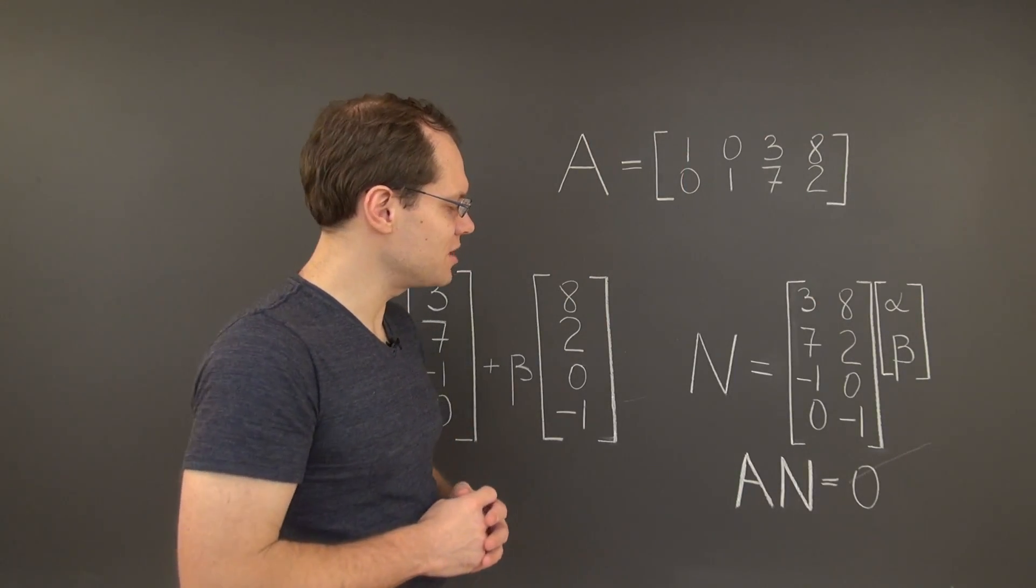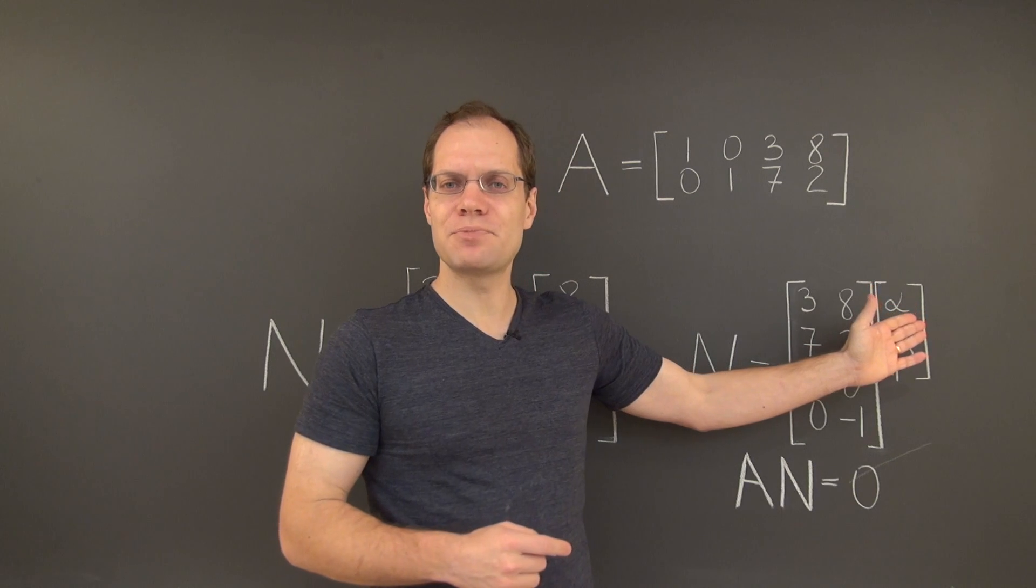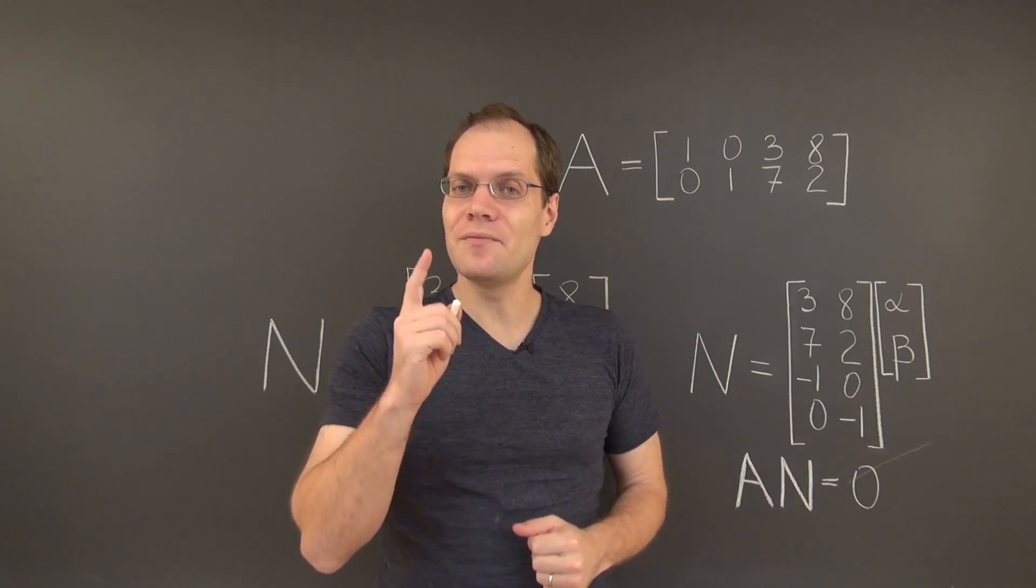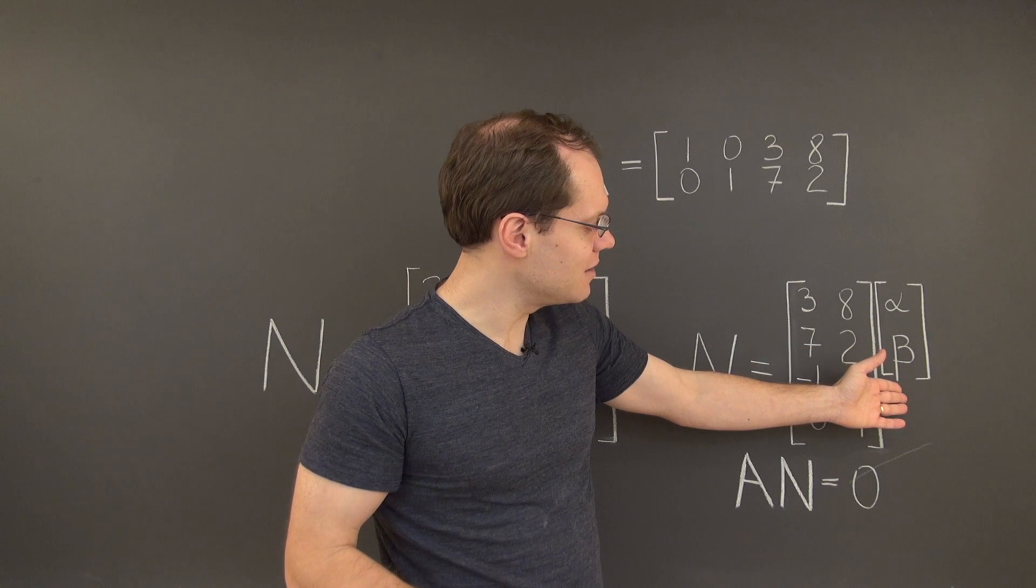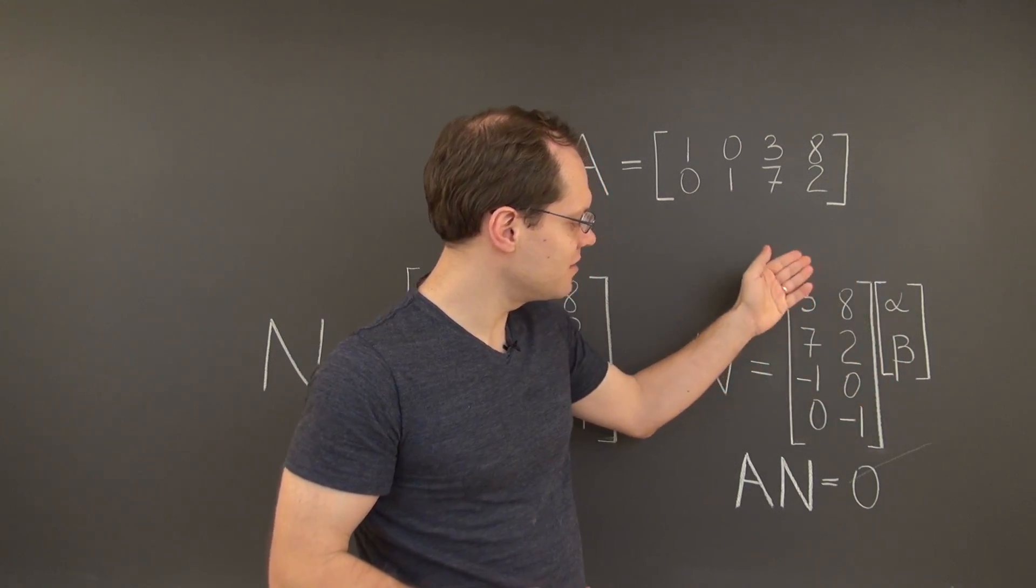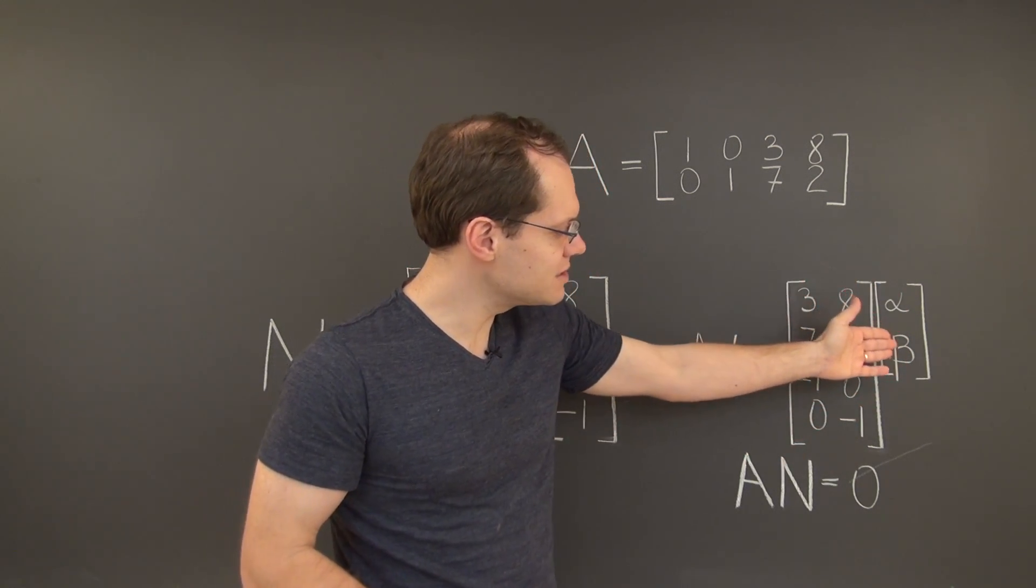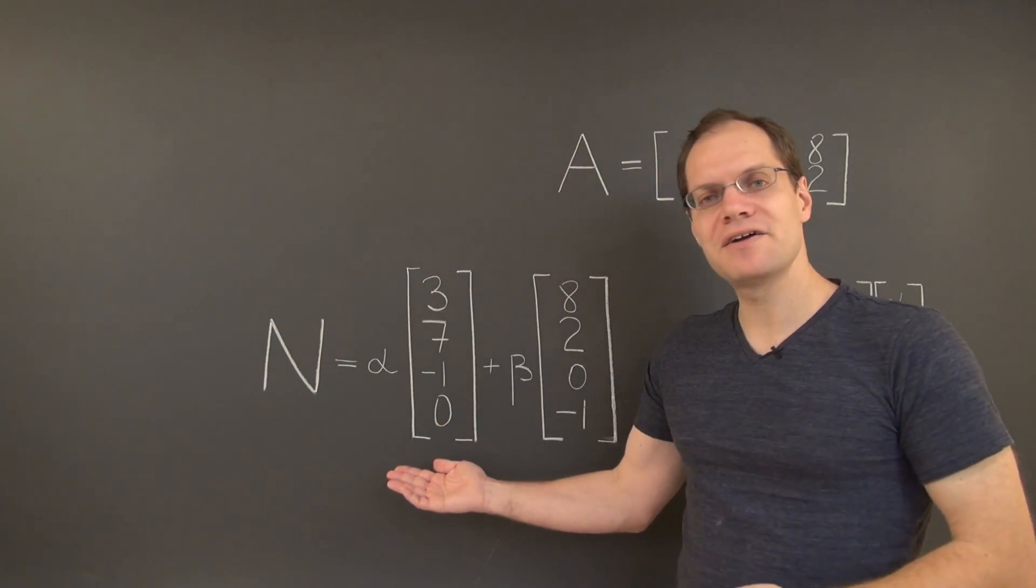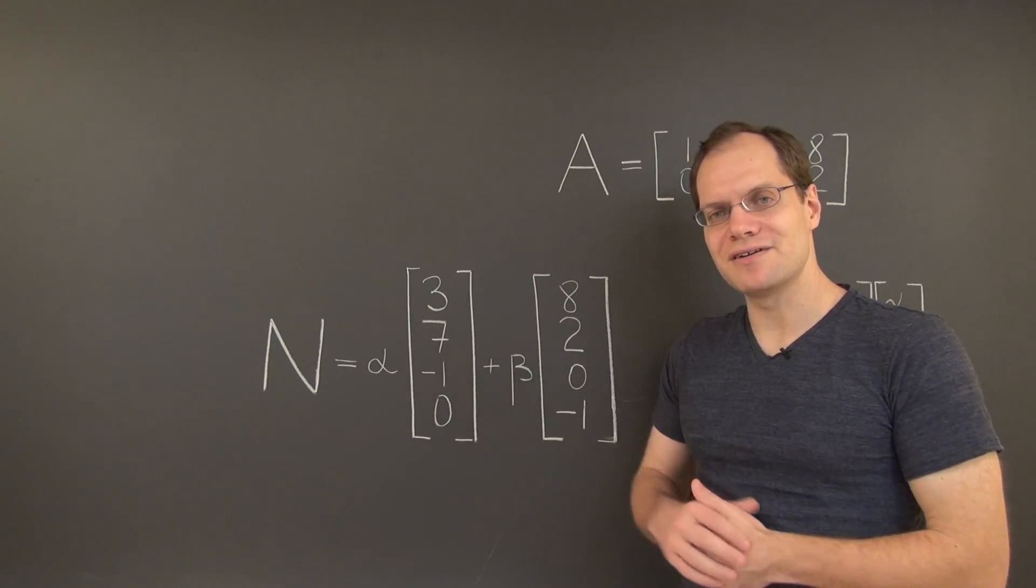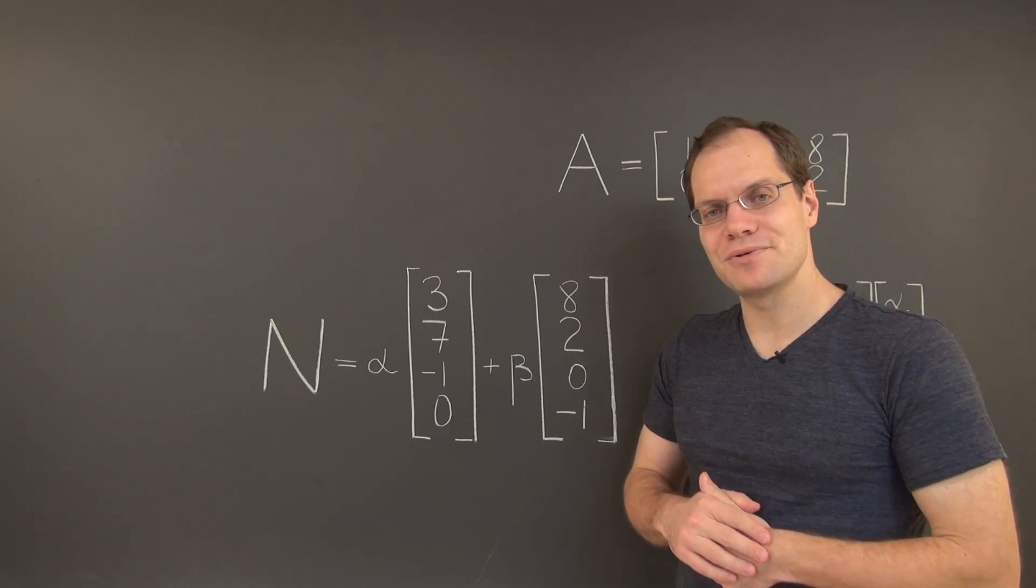To convince yourself that this is right, simply carry out this product from the column-wise perspective. And the result will be a single column that equals alpha of the first column plus beta of the second column. So, this very expression is recovered. And we did it with the help of matrix algebra.